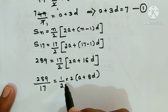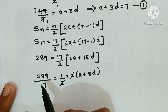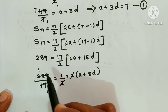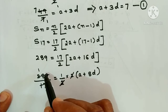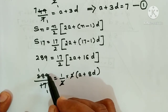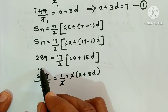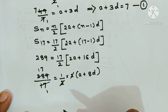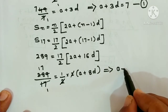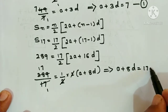Now take 2 common again and take 17 to the LHS side as denominator: 289 divided by 17 is equal to, after cancellation, a plus 8d. 289 divided by 17 is 17, so this implies a plus 8d is equal to 17. This is equation number 2.